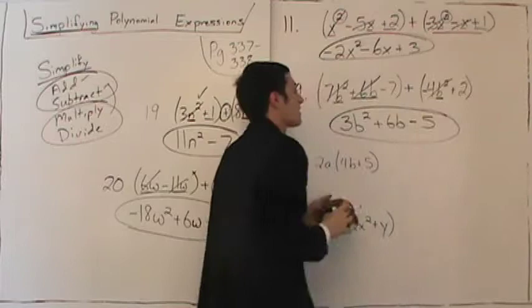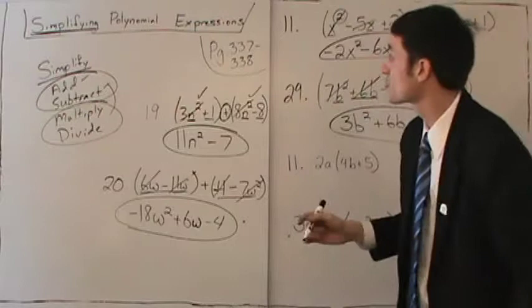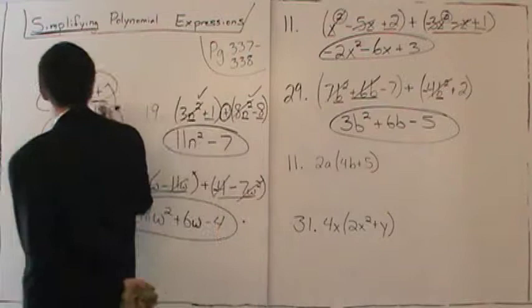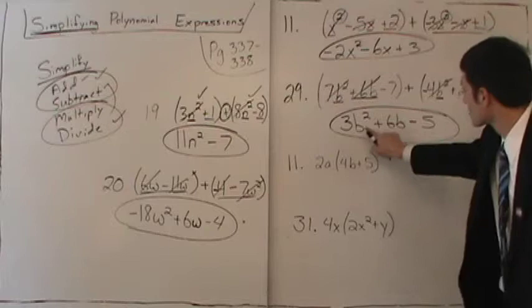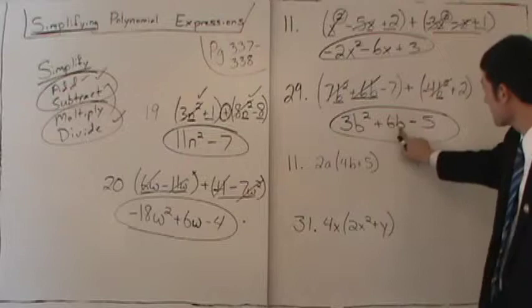Hopefully you've seen that addition and subtraction are completely different from multiplication and division. With multiplication and division, you just glue things together. With addition and subtraction, something must match and what matches doesn't change. Here we're stuck because nothing matches B squared, nothing matches B, and nothing matches our number. We are stuck and done — this is simplified.